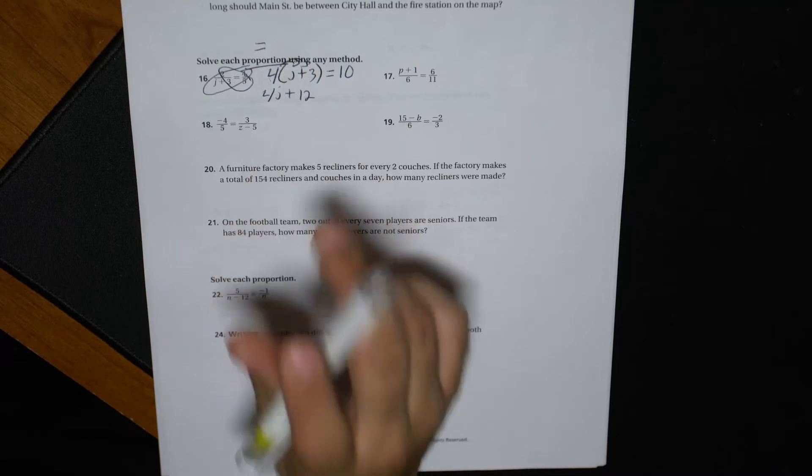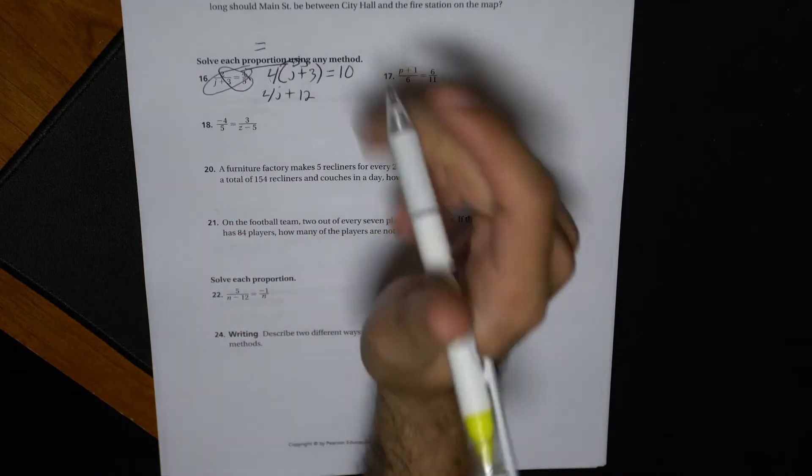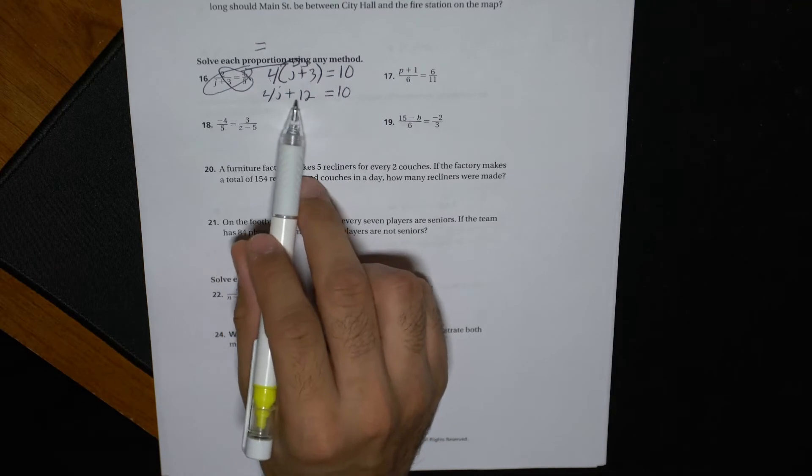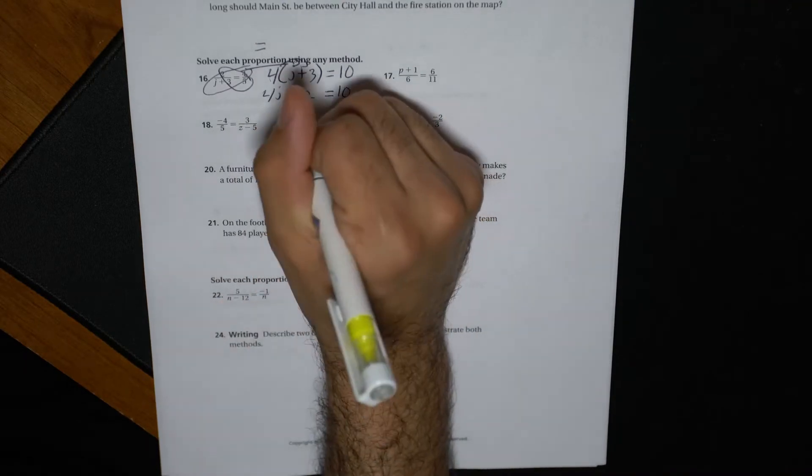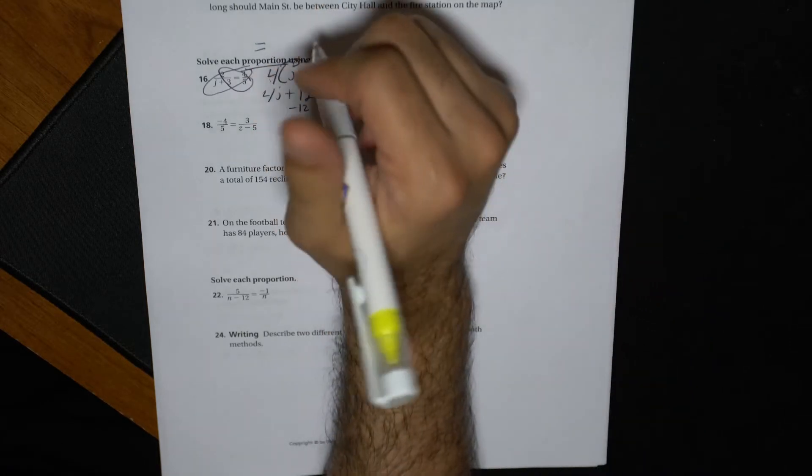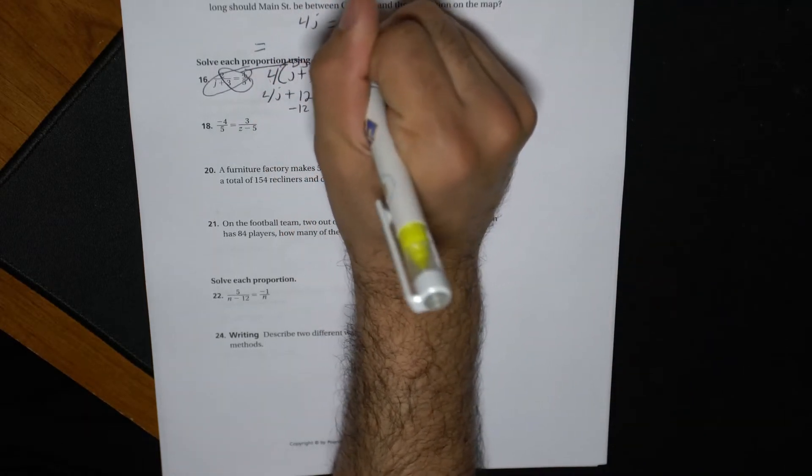Remember when we have parentheses, that's a distributive property. And we just have the 10 here. Opposite of positive is negative, so we're going to do minus 12, minus 12. And we get that four j equals two.